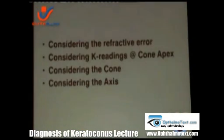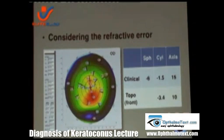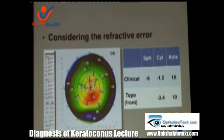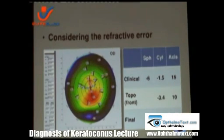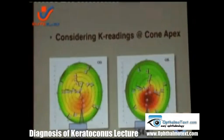Upon making a decision, we have to consider the refractive error, K readings at the cone apex, the cone itself, the location of the cone, and the axis. We have to look at both the topographical astigmatism and the manifest astigmatism. Since we are working on the cornea and changing the anterior surface, we must consider the amount of topographical astigmatism — not just the axis, but the amount. What I do is always take the topographical astigmatism and the manifest sphere.